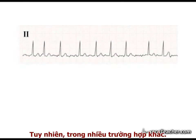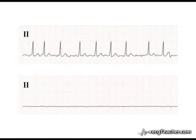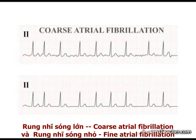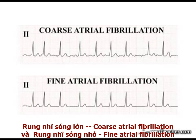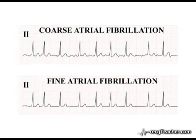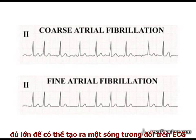In many cases, however, they are of low amplitude, with minimal disturbance of the isoelectric line. These two situations are sometimes referred to as coarse and fine atrial fibrillation. Coarse atrial fibrillation probably arises when the number of depolarizing sites in the atria is limited to less than 10, and each individual electrical event affects a mass of atrial muscle significant enough to cause a substantial wave on the ECG readout.